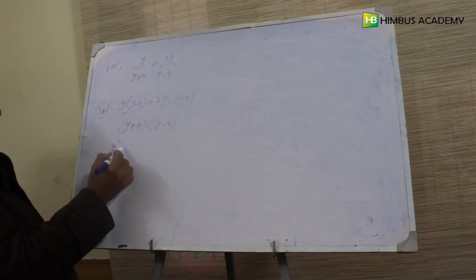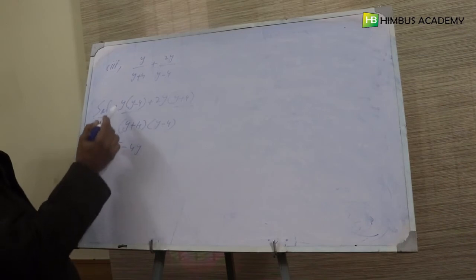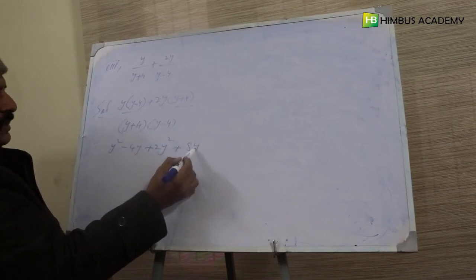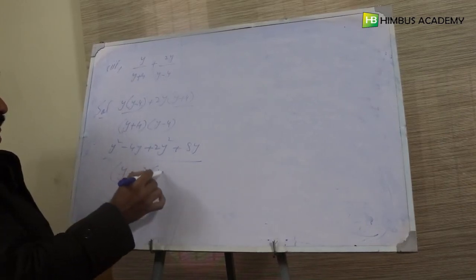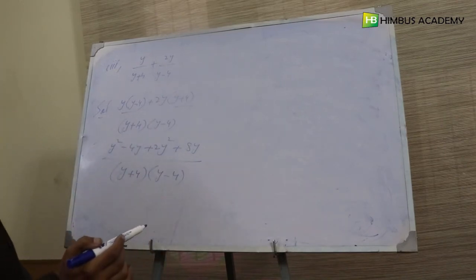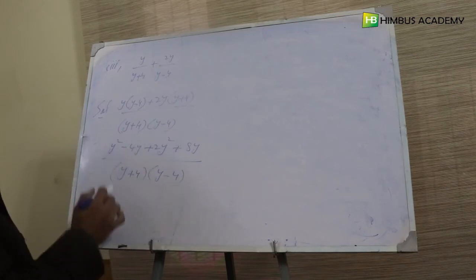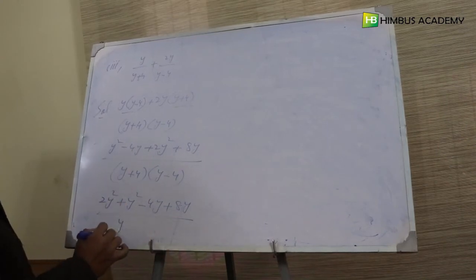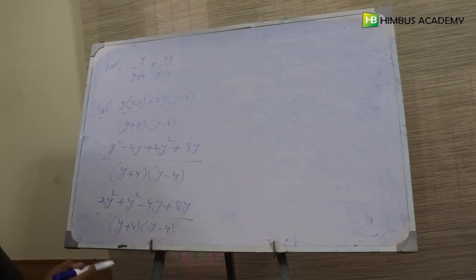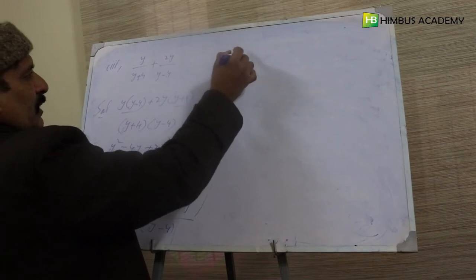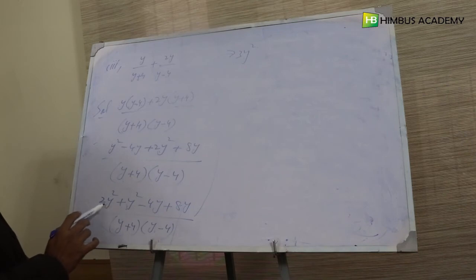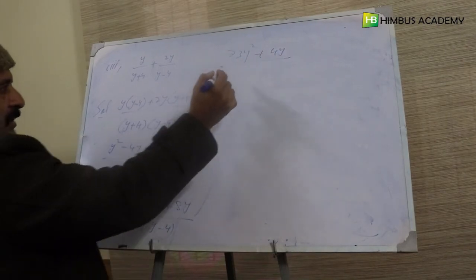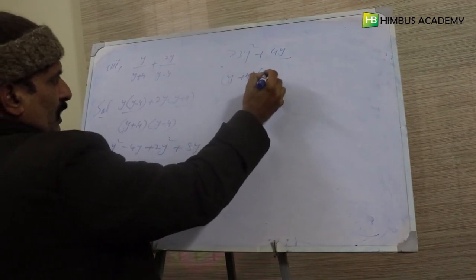Ab multiply karte hain: y into y minus four se y square minus four y. Aur two y into y plus four se two y square plus eight y. Yeh sab y plus four into y minus four ke upar likha jayega. Ab arrange karte hain: two y square plus y square, minus four y plus eight y — denominator y plus four into y minus four. Isse aata hai: two y square plus one y square teen ho jaata hai, yaani three y square. Minus four y plus eight y se plus four y. To answer hai three y square plus four y, divided by y plus four into y minus four.